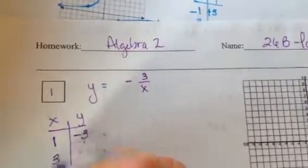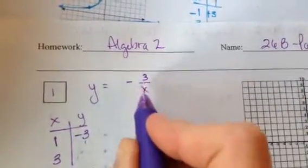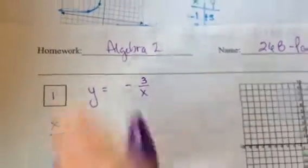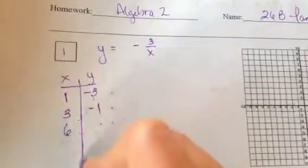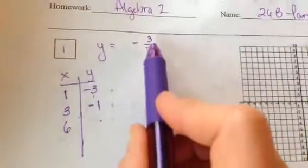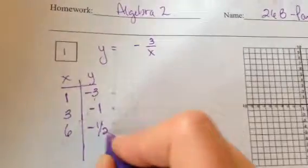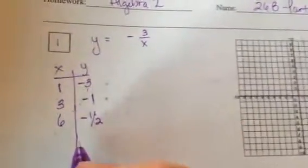If I plug in a 3, I am going to get what? 3 over 3 is 1. So I'm going to get a negative 1. How about if we plug in a 6? You can plug in anything you want, so why not plug in things nice? But 3 over 6 is 1 half. So I'm going to get a negative 1 half. And let's see, what else can we plug in?